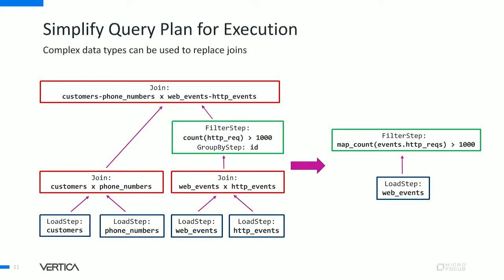The execution itself is also simplified — you don't have to have joins if you have complex types. You can simply have a load step to load the map type and then apply the function on top of it directly. However, if you have separate tables, you have to join all the data, apply the filter step, and then do a final join to get your results.